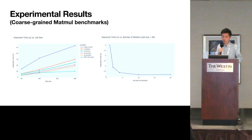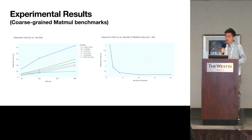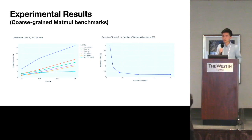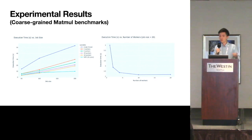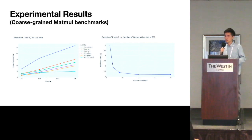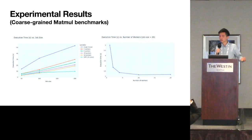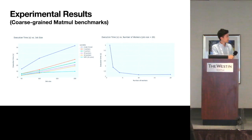On the left figure, the y-axis shows execution time and the x-axis shows job size. Across all job sizes, increasing the number of workers decreases execution time, approaching SMP performance. The right figure shows execution time versus number of workers: as the number of workers increases, execution time decreases quite significantly.